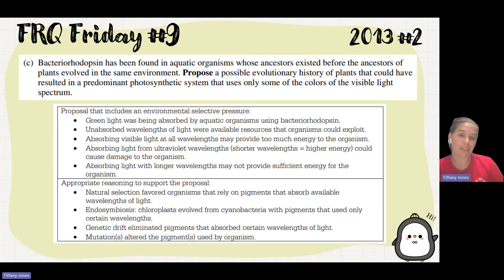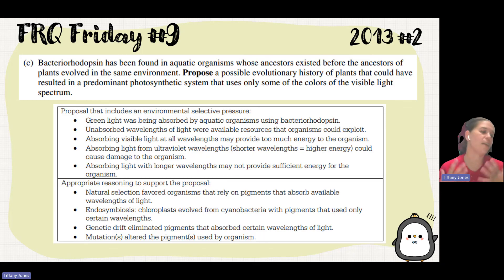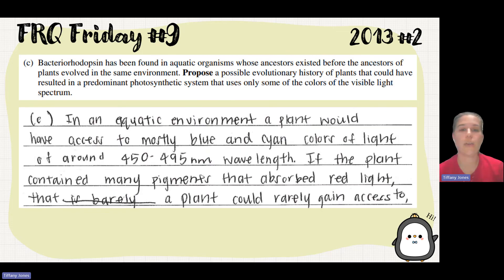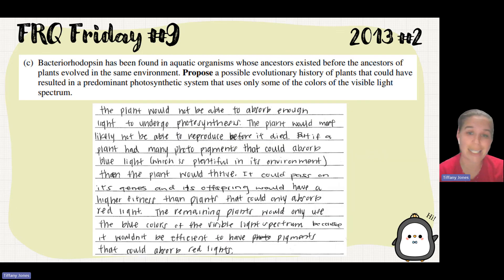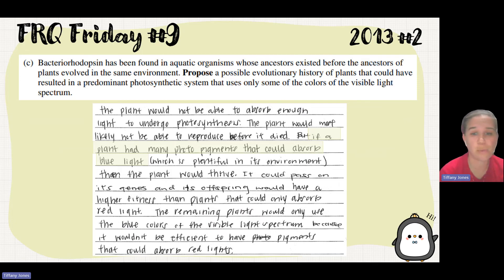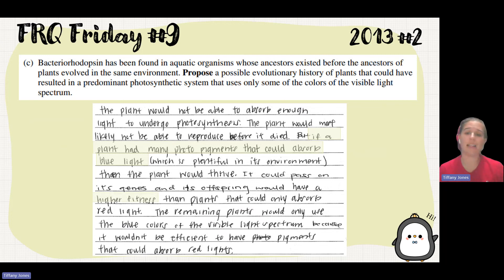Endosymbiosis suggests chloroplasts evolved from cyanobacteria with pigments that only used certain wavelengths. Genetic drift led to the elimination of pigments absorbing certain wavelengths — those absorbing too much light would die off. Mutations could have altered the pigments used. The sample answer notes that an aquatic environment would have access to blue and cyan light; plants with pigments absorbing red light could barely access enough for photosynthesis, whereas plants with pigments absorbing the plentiful blue light would thrive, pass on their genes, and achieve higher fitness and efficiency.